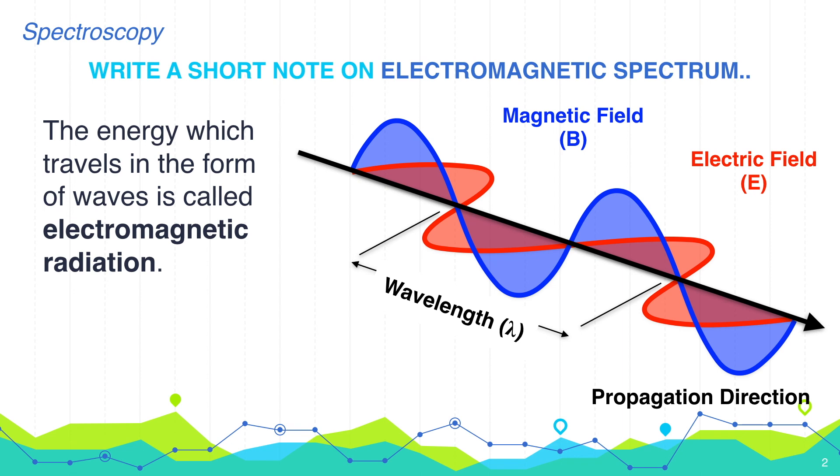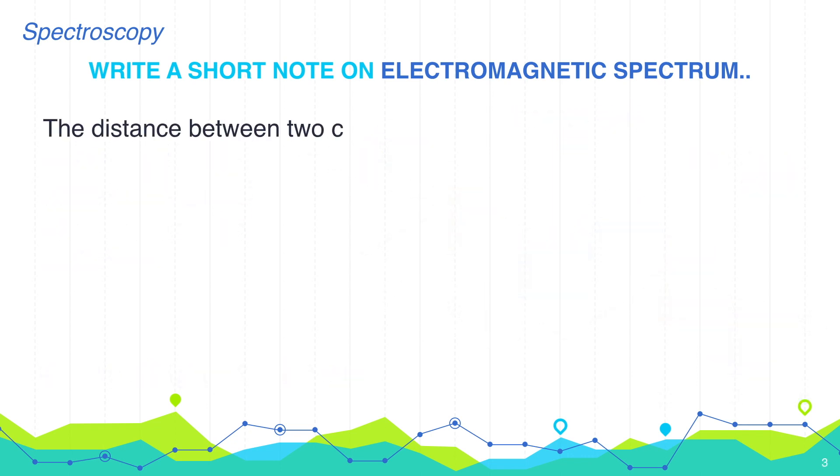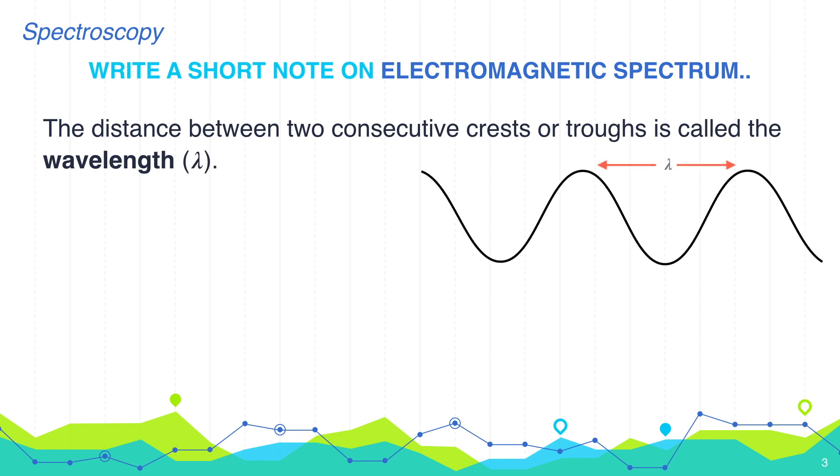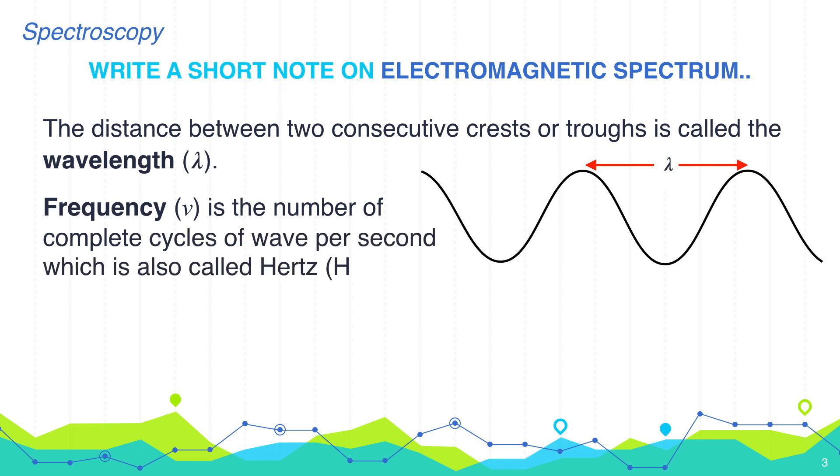All the electromagnetic radiations, they travel with the same velocity in vacuum i.e. 3 x 10 to the power 8 meters per second. But these radiations, they differ in frequency and the wavelength. The distance between two successive crests or troughs is called the wavelength and it is denoted by lambda. Similarly, frequency nu is the number of complete cycles of wave per second which is represented as hertz.